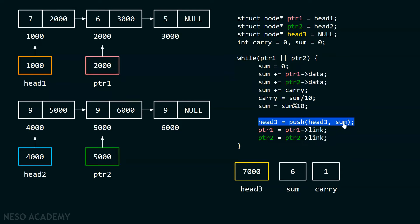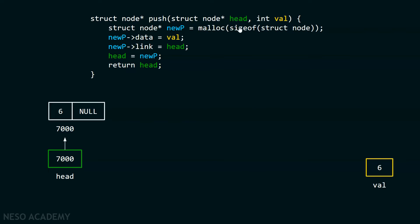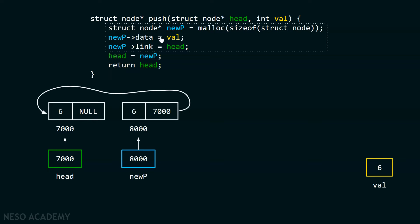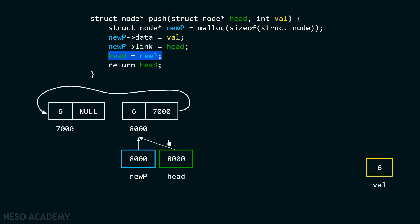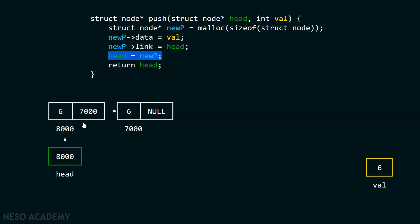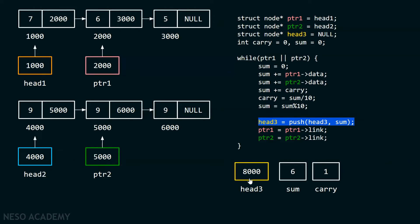Head3 means address 7000 and sum means 6. This gets received in the push function, a new node is created, and with new_p->link = head we store the address of the previous node (7000) in the link part of this new node, so it points to that particular node. Then head is updated so it points to this new node at address 8000. This is the resultant linked list so obtained. head3 pointer receives address 8000. After this, we have to update our pointers.